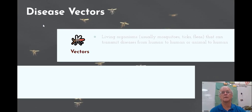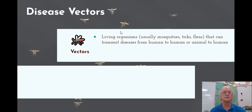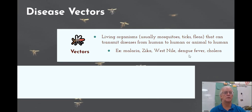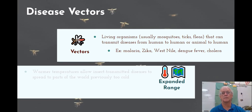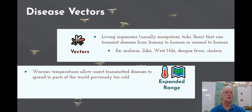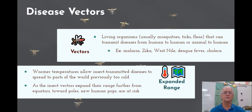Disease vectors such as mosquitoes — these living organisms, usually mosquitoes, ticks, and fleas — can transmit diseases from humans to humans or from animals to humans. For example, malaria, Zika, West Nile, dengue fever, and cholera. They are going to have an expanded range because of warmer temperatures that are going to allow the insects — mosquitoes, ticks, and so forth — to spread to parts of the world that were previously too cold. As the insect vectors expand, their range will get further and further from the equator towards the poles. New populations will be at risk.